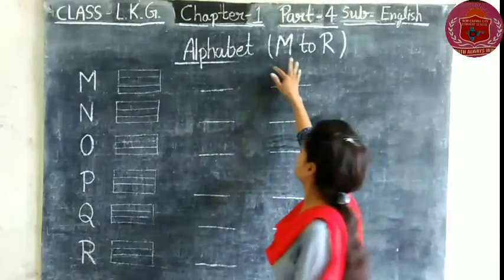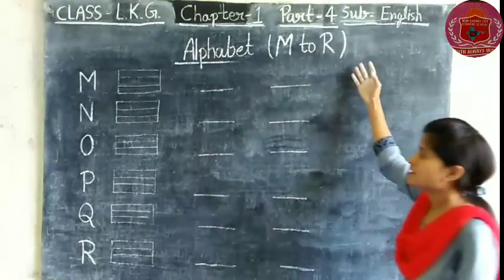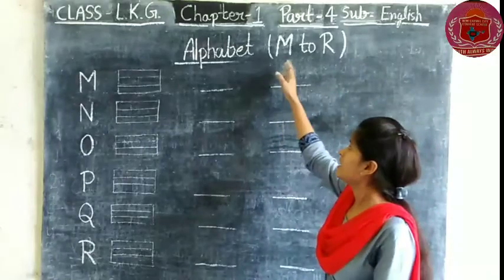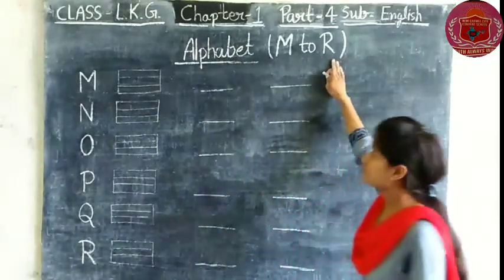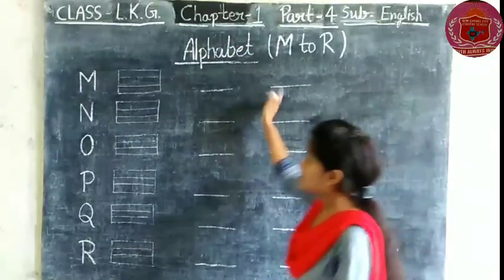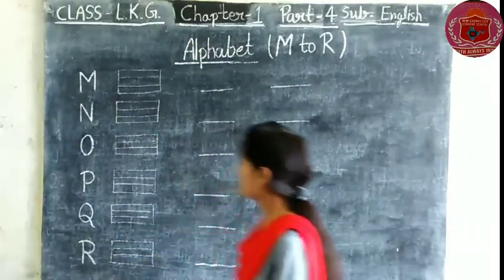In this class, we will do part 4 of the alphabet, which starts from M and ends with R.